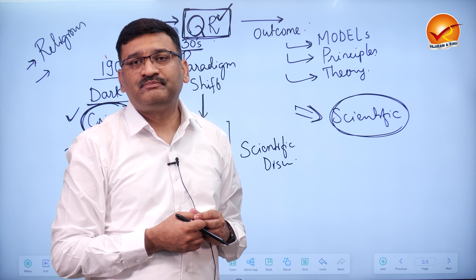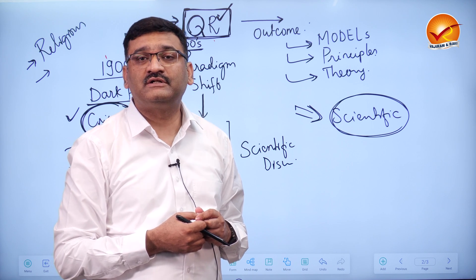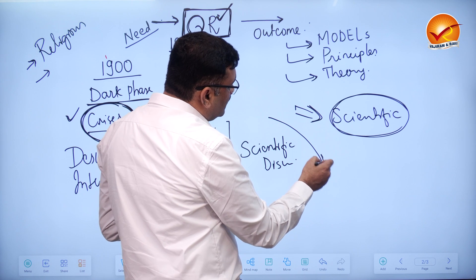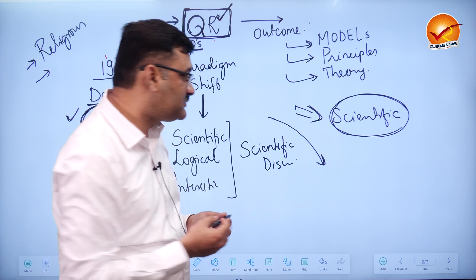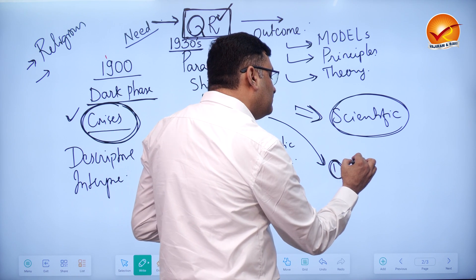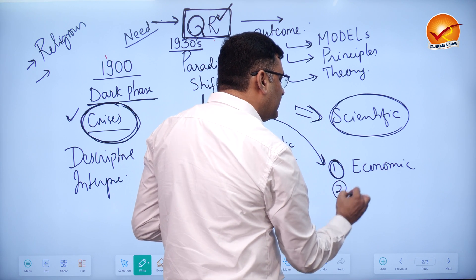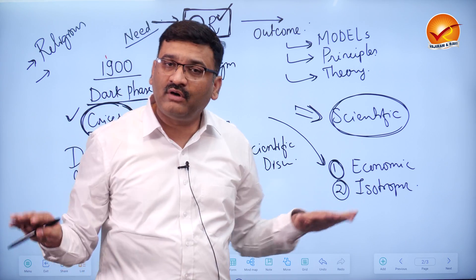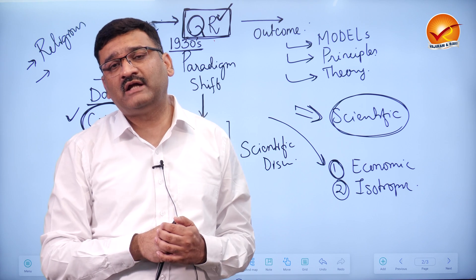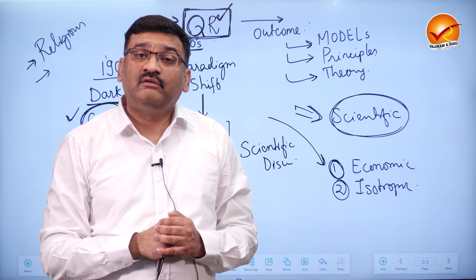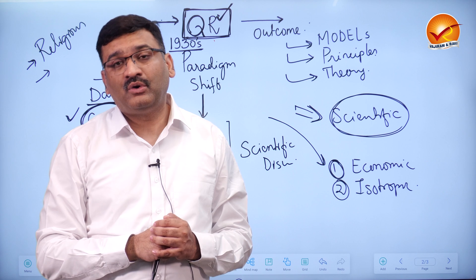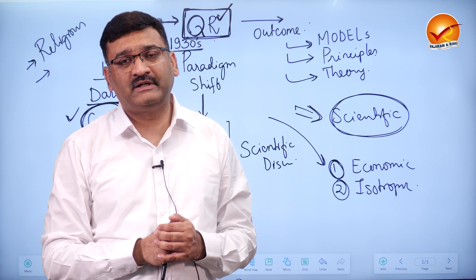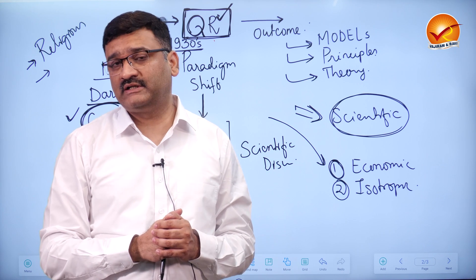Geography today is not treated as pure humanities; rather, it is considered a scientific or semi-technical subject. This quantitative revolution was based on certain assumptions. It assumed that man is an economic man and that surfaces are isotropic surfaces, meaning uniform, homogeneous surfaces. Economic man means the quantitative revolution believed that man is always motivated by economic incentives, all decisions are governed by profit, and humans tend to maximize profit. These were the basic assumptions on which quantitative revolution was based.